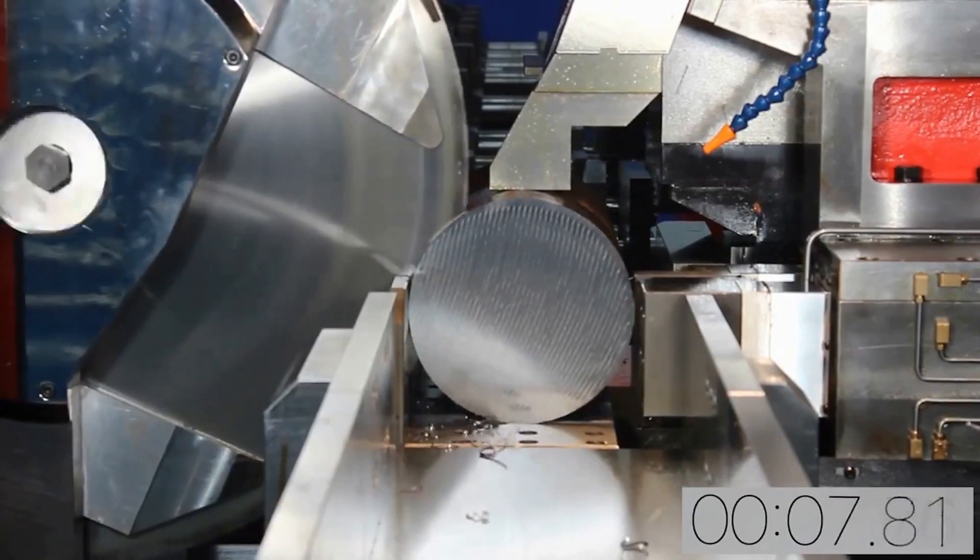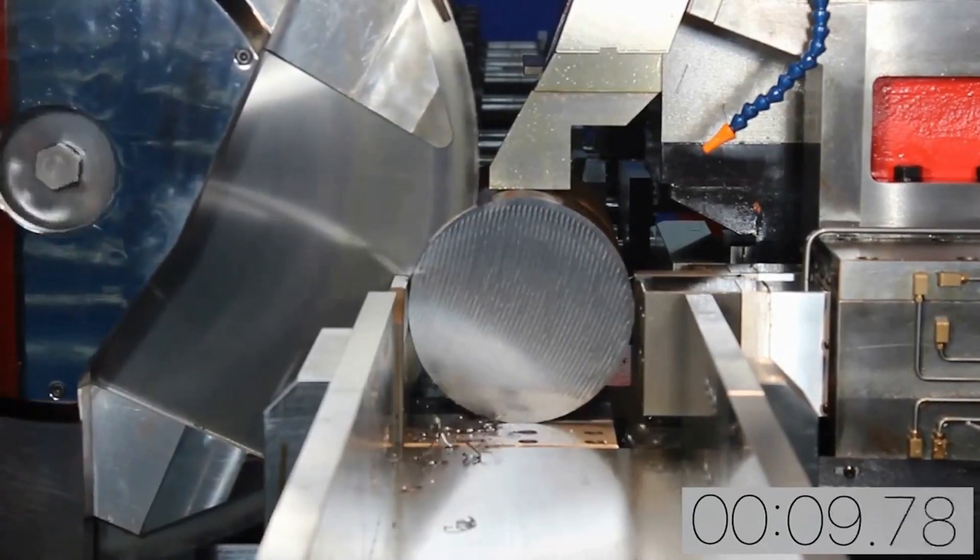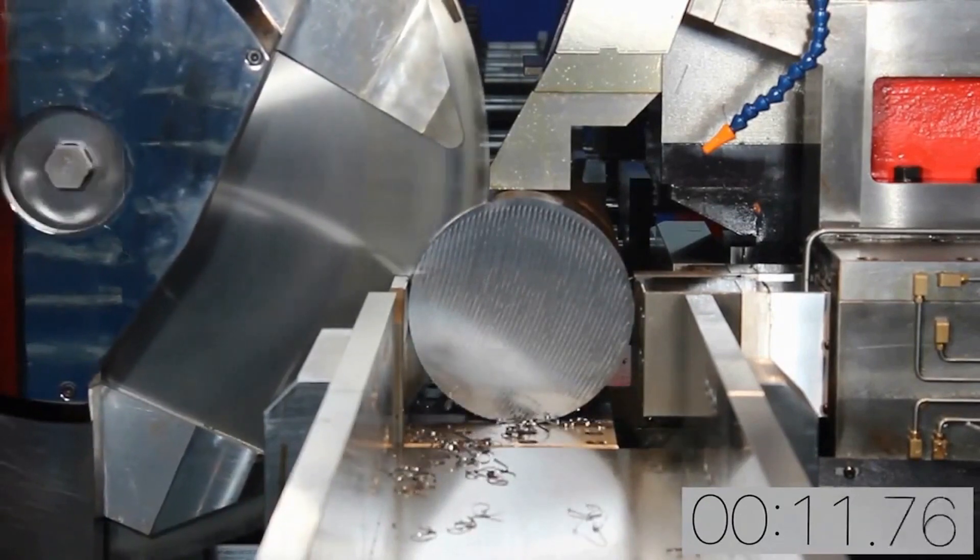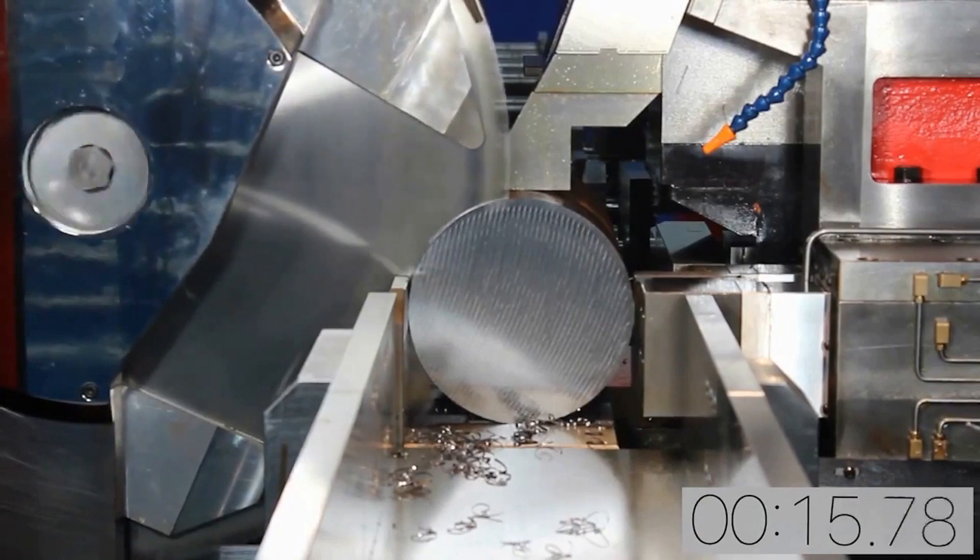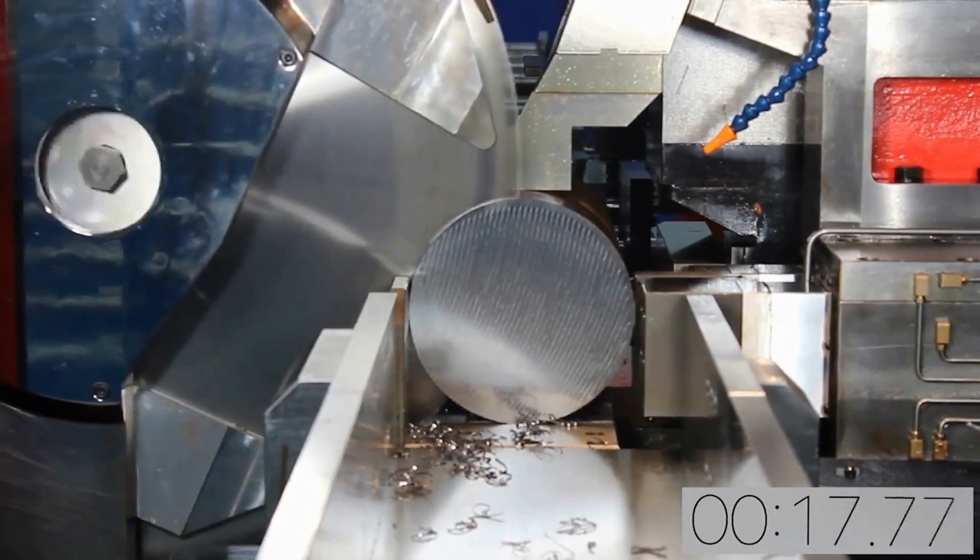The heavy duty construction is evident by how solid the machine sounds during cutting. The CMB230 excels at producing smooth cuts that are not only straight, but also accurate in length.